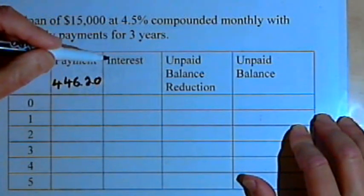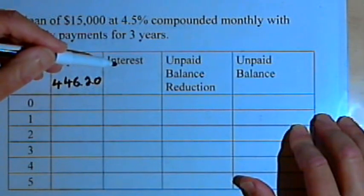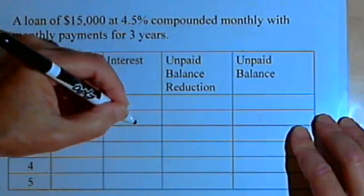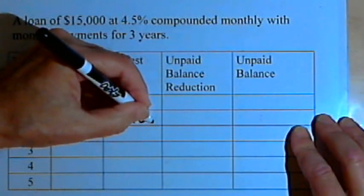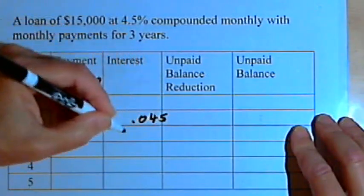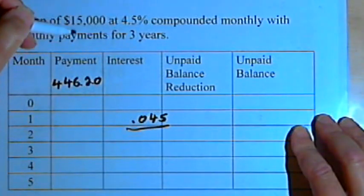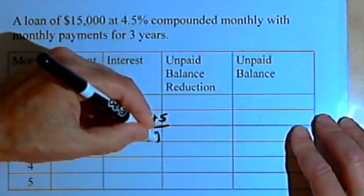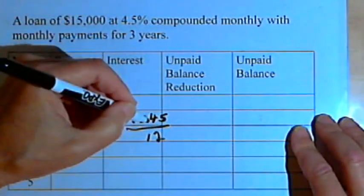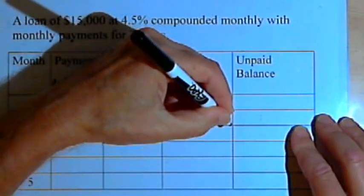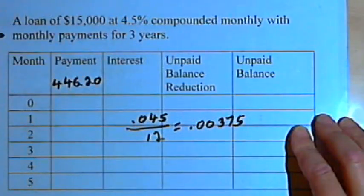The other thing we have to do is figure out what the interest rate for each payment period is. We're going to take the annual interest rate of 4.5%, turn that into a decimal — 0.045 — and then divide that by the number of compounding periods every year. Since we're making monthly payments, we divide by 12. That gives us 0.00375, which is the monthly interest rate.